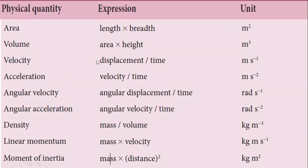Velocity is displacement by time. Displacement is measured in meters, so the unit is meter per second. Acceleration is velocity by time. The unit for velocity is meter per second, so acceleration is meter per second divided by time, giving meter per second squared.